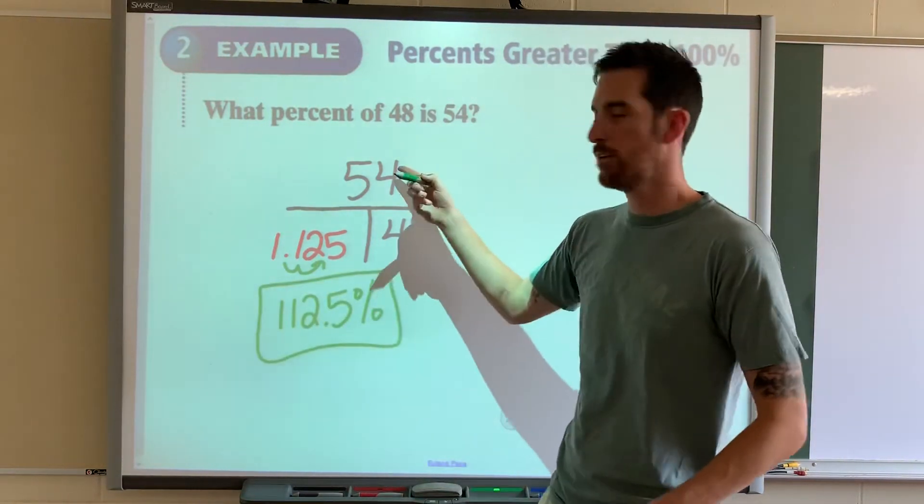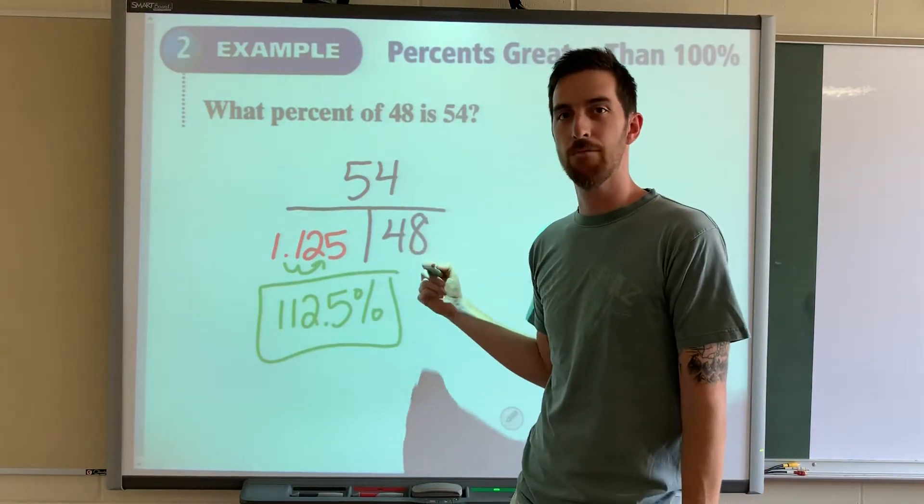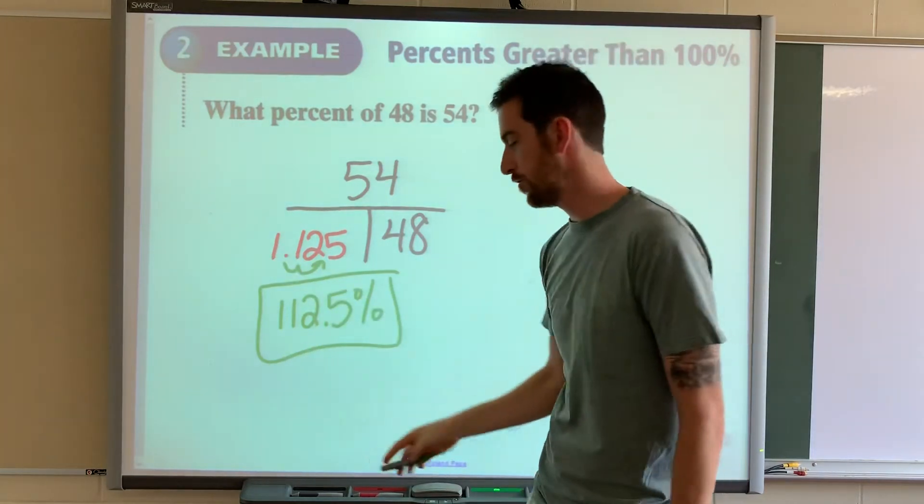So, anytime your numerator is larger than the denominator, it's going to be over 100 percent. Let's move on.